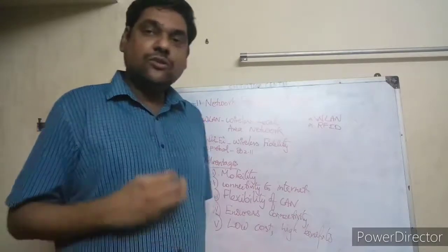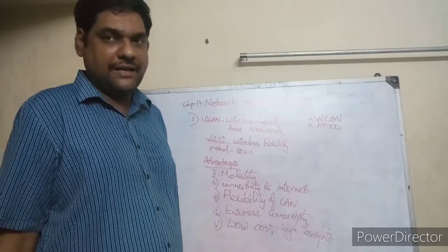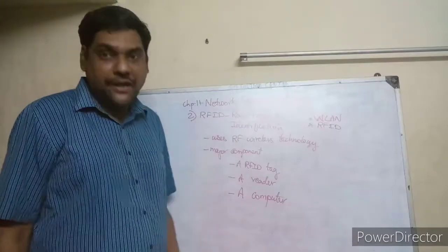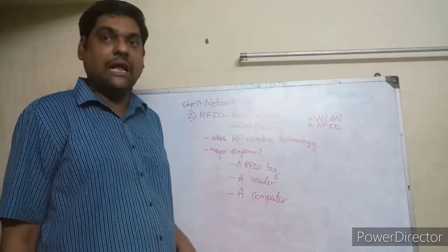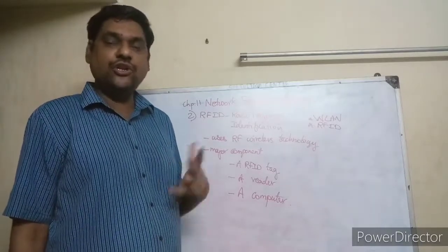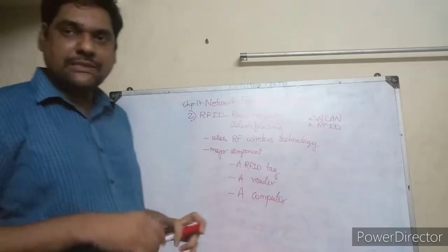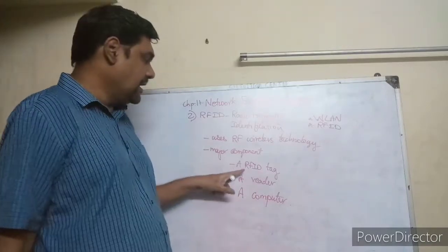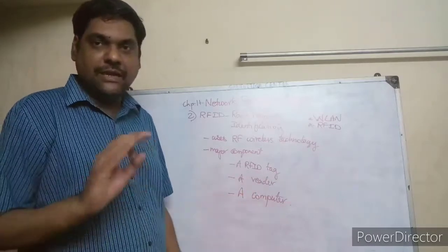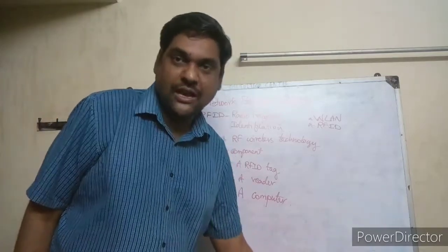Next we'll see about the RFID. RFID stands for radio frequency identification. It uses RF wireless technology to identify the objects. The main components involved in this RFID technology are RFID tag, a reader, and a computer. These are the three components involved in that RFID technology.